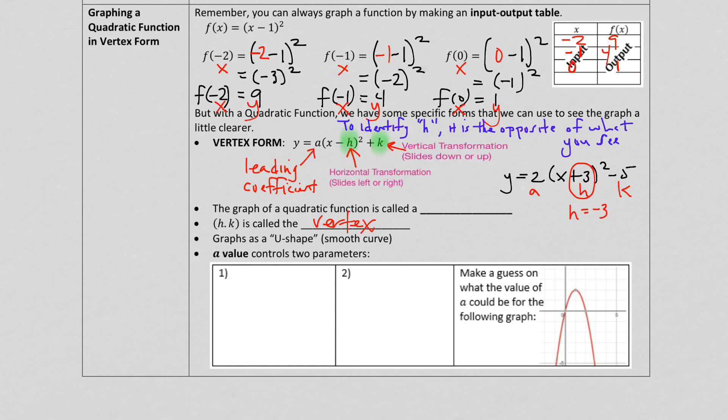And to finish this first note, once we graph quadratics now, we know they're going to be u-shapes, but these u-shapes we're going to call parabolas. So the u-shape is going to be called a parabola.